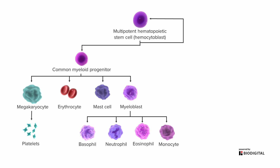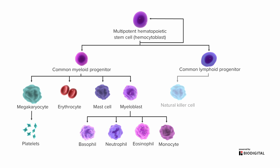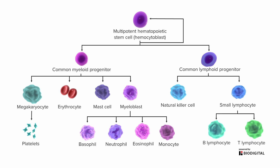In addition to the myeloid line, we also have the lymphoid line. The lymphoid line can form something called natural killer or NK cells, or basic lymphocytes, which themselves can form various B cells or T cells, which can be subclassified even further.